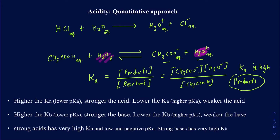Now why don't we write Ka for something like HCl? Because the Ka for strong acids is going to be very high — there is complete dissociation of HCl into H3O+ and Cl-, so you barely have any reactant left over. You only have products, and as a result the Ka is going to be very high.